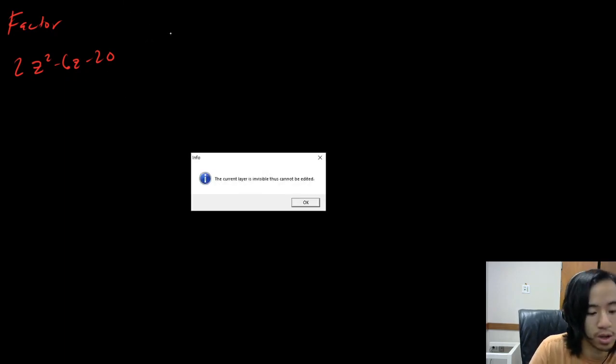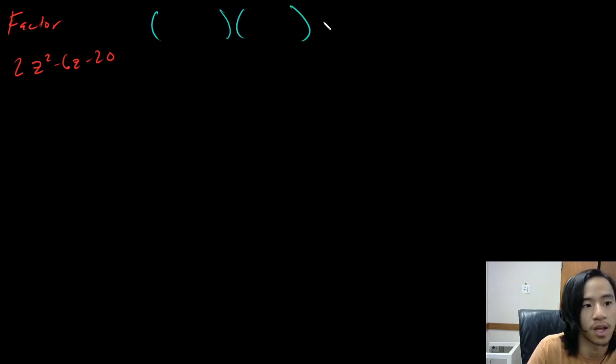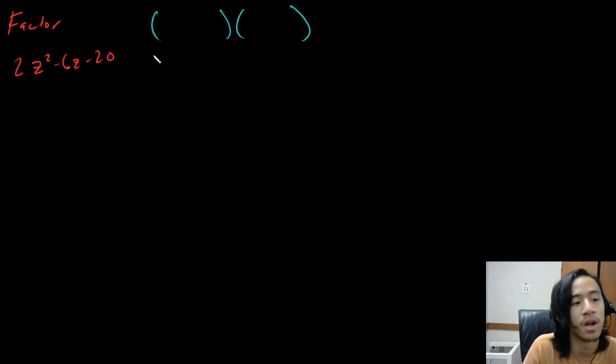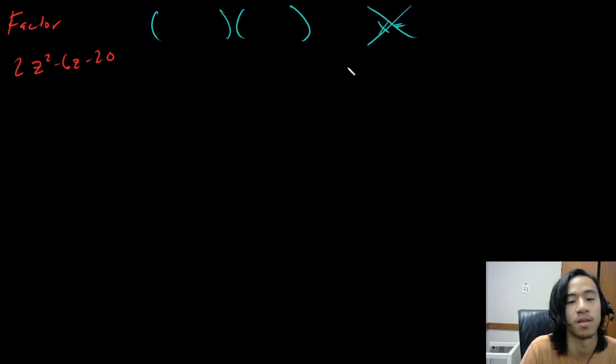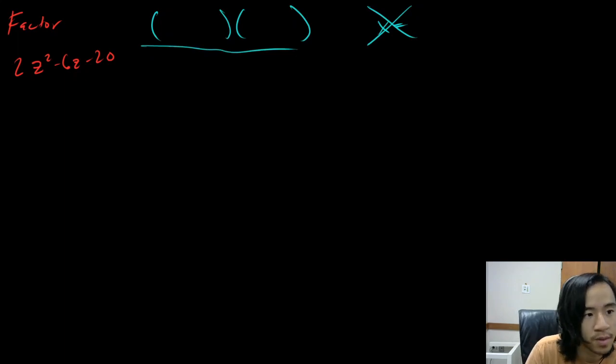So when you factor, your answer should look like two factors — something like this — or more than two factors. It should not look like this. So this is bad. You want it to look like this.